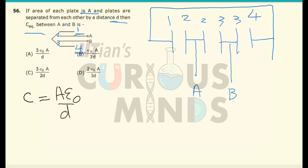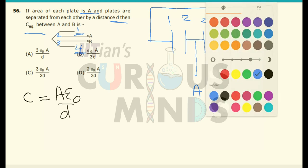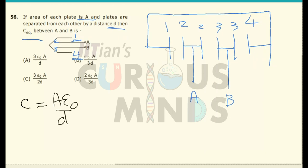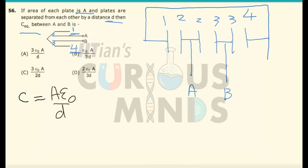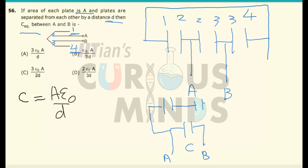If I rearrange this diagram, it will look somewhat like this: this is A, this is B, and between them there is plate 2 and 3, whose capacitance is equal to C. Parallel to it, there is the 1-and-2 capacitor and over here there is the 3-and-4 capacitor, whose capacitances are also C.